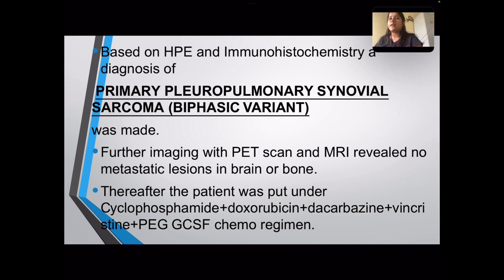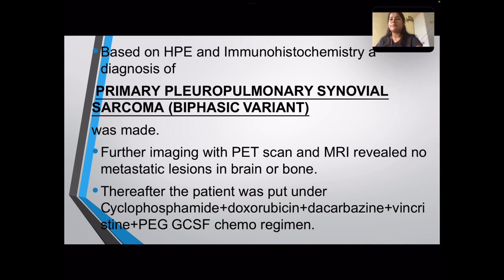Further imaging with PET scan and MRI of the brain was performed to evaluate for any metastatic lesions. The patient was then put on a doxorubicin-based chemotherapeutic regimen consisting of cyclophosphamide, doxorubicin, dacarbazine, vincristine, and PEG-GCSF chemoregimen.